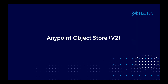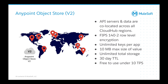Now let's get to object store V2 and talk about the differences from V1. The major difference is that V2 allows your applications to co-locate the object store with the application. So when you deploy an application to, say, Buenos Aires, it will also spin up an object store for that application in the same region.